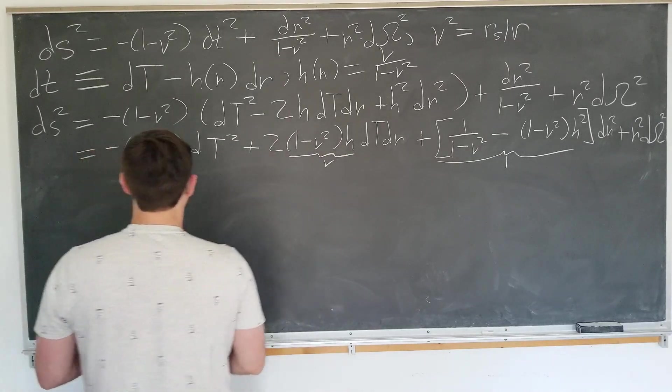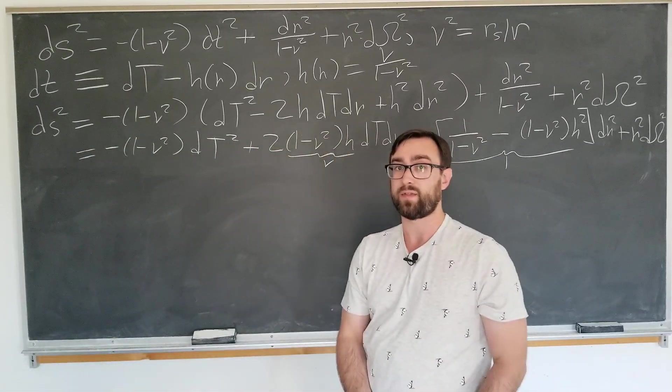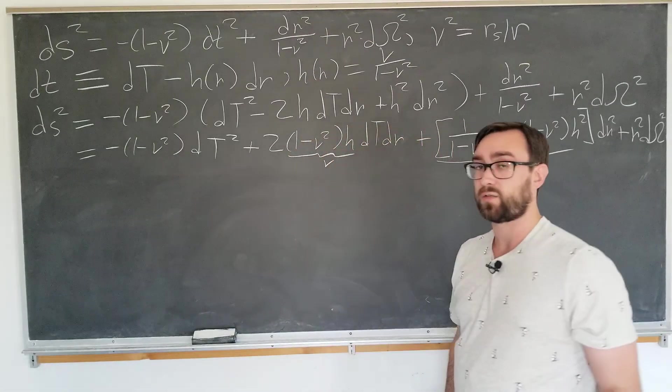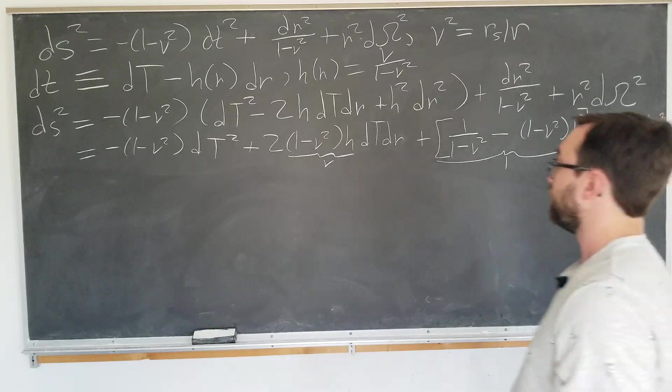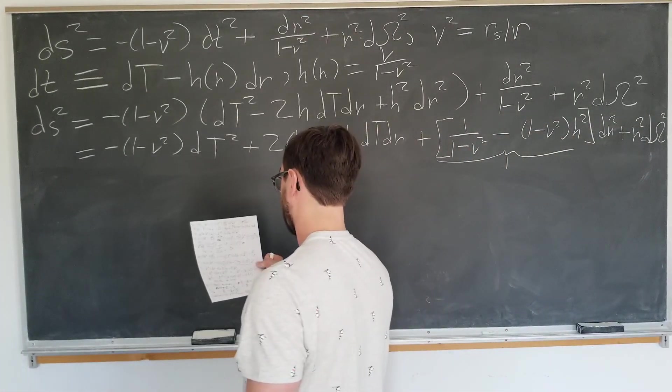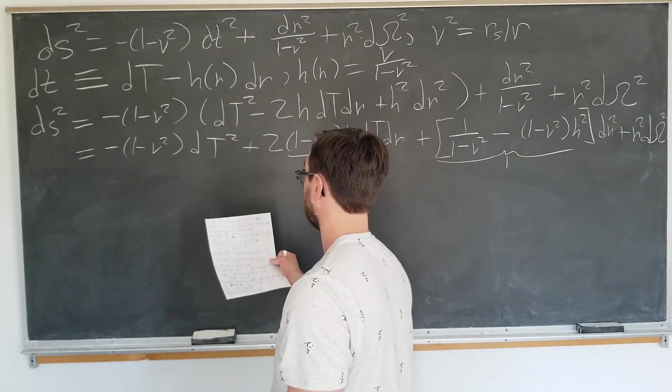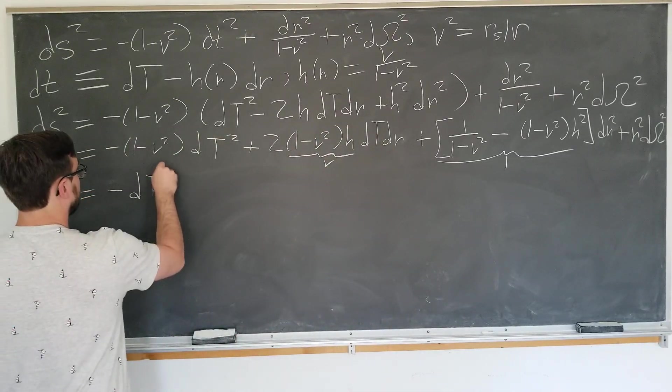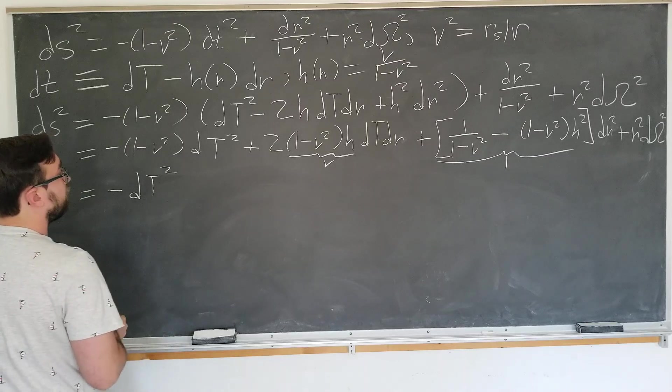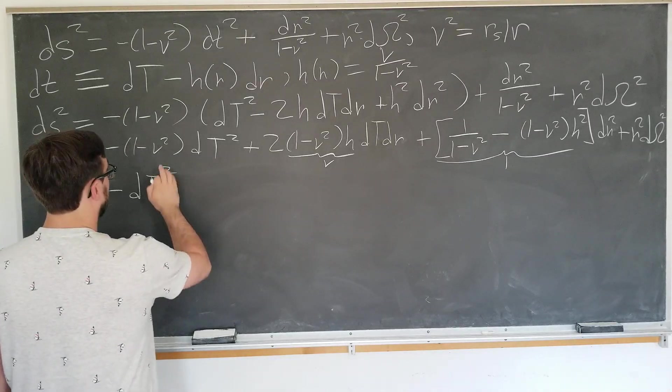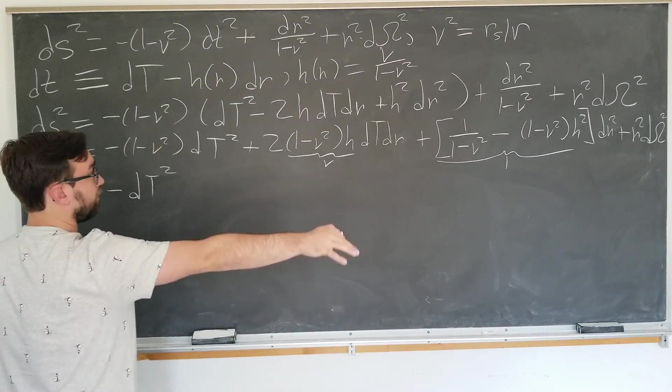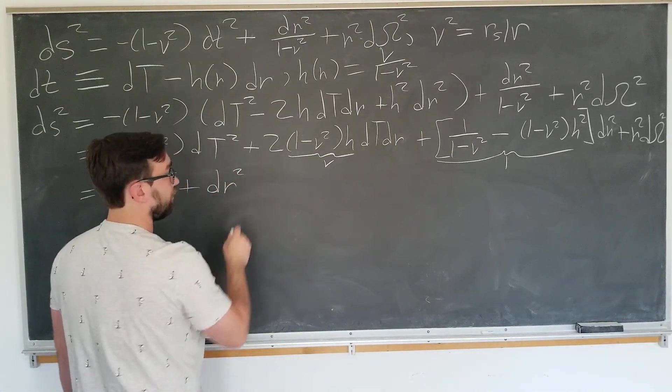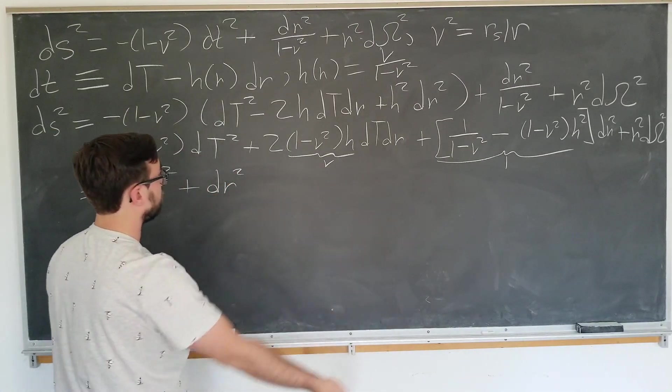Now we're going to do a trick here. Since we know what the answer is, we want to actually separate these two dt squared terms. You'll see why in a moment. This becomes minus dt squared. I'm going to put the other dt squared term over there. I'm going to rearrange the terms as well. We have a dr squared term.